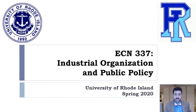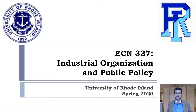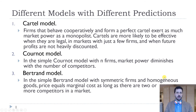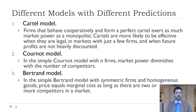Hi. This is the first video for Chapter 12. Chapter 12 is all about trying to measure the effects of oligopoly and market power in various industries. We've seen a lot of different models so far, starting with Chapter 9, where we did the cartel model, where firms collude.